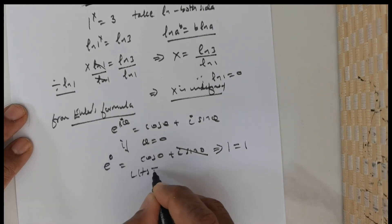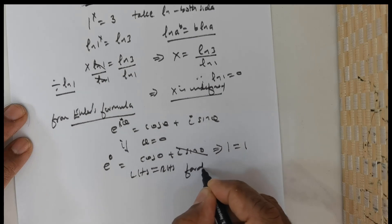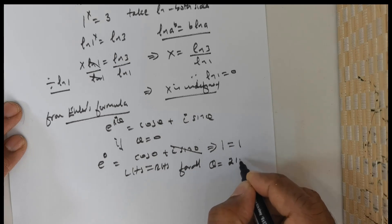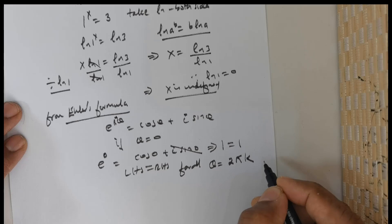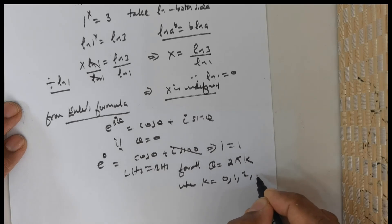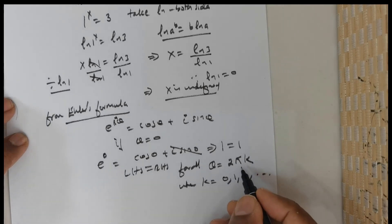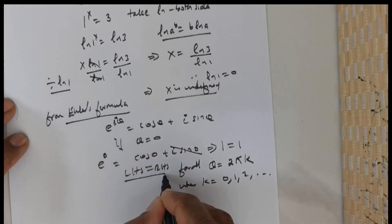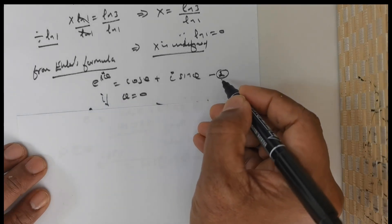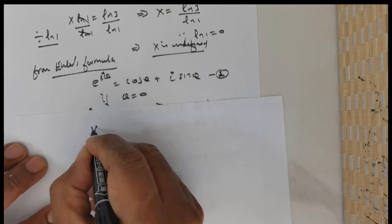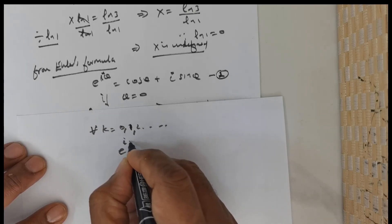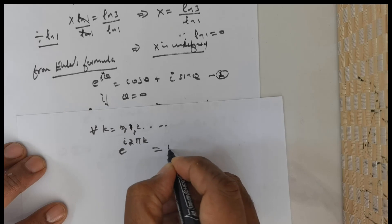Now left hand side will be equal to right hand side for all values of theta of the form 2 times pi times k, where k takes the values 0, 1, 2, etc. Now if you were to substitute k equal to 1, you will still get left hand side equal to right hand side. So we can rewrite: for all values of k starting from 0, 1, 2, etc., e raised to the power of i times 2 times pi times k will give me 1.